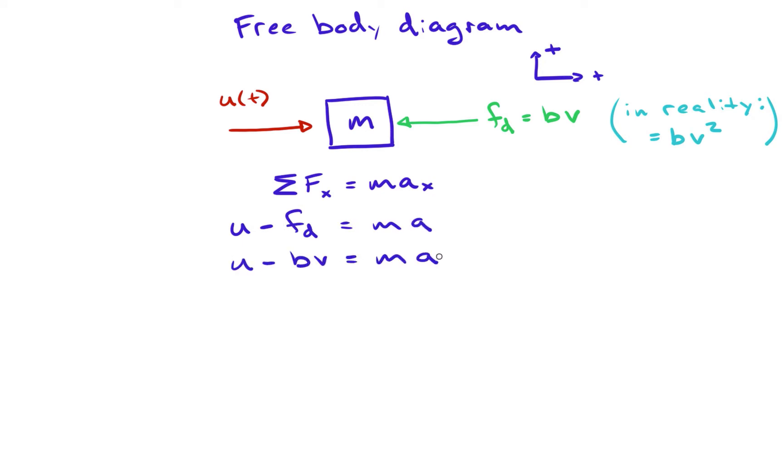However, we need to think about this equation as an input-output relationship, where the input is u and the output is the velocity, v. So, our equation should be in terms of these variables. Making the appropriate substitutions, we arrive at the following ordinary differential equation.